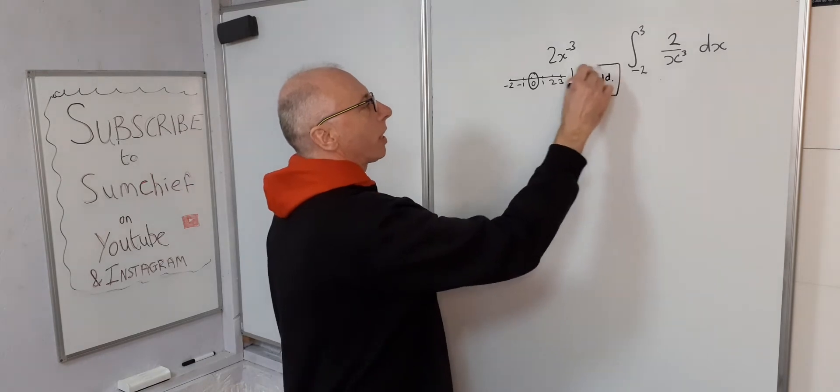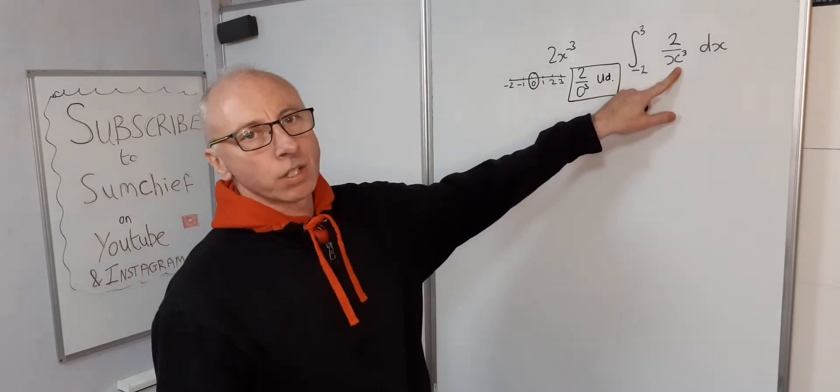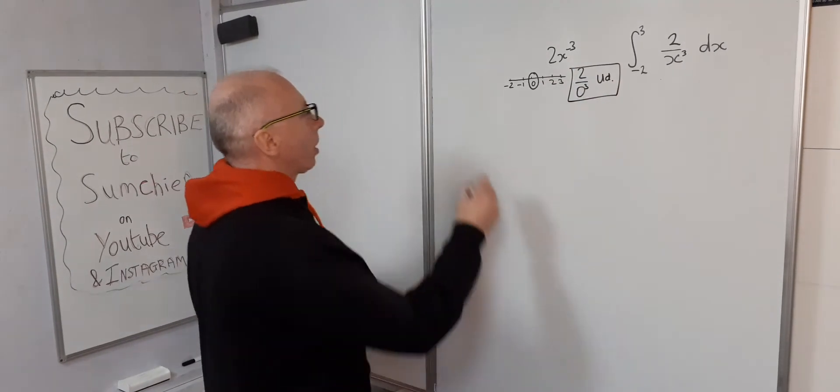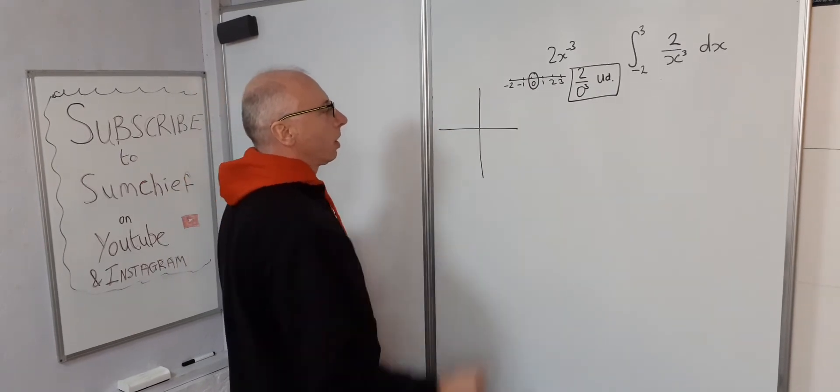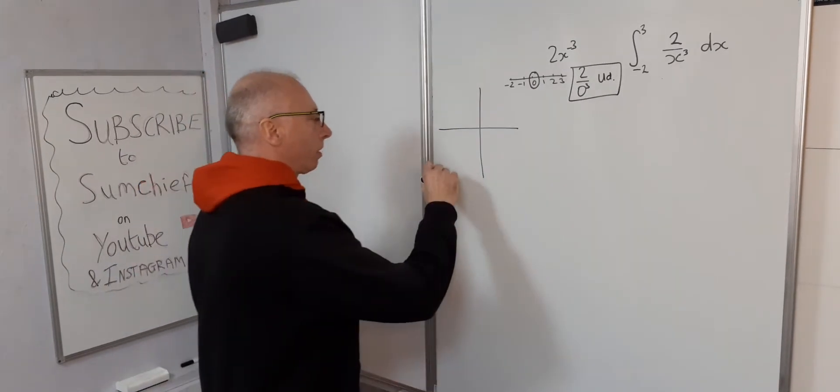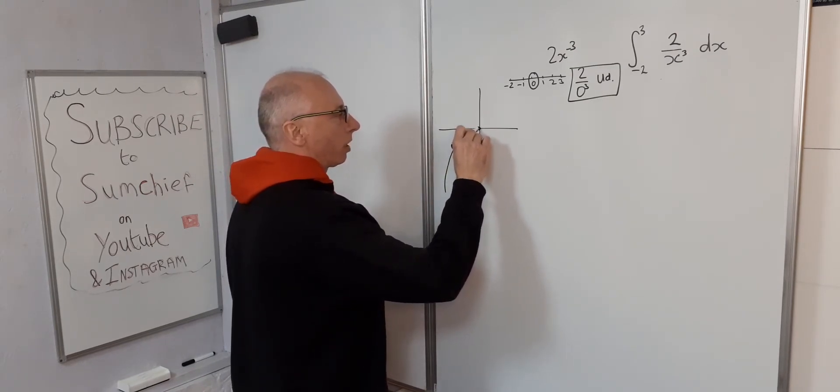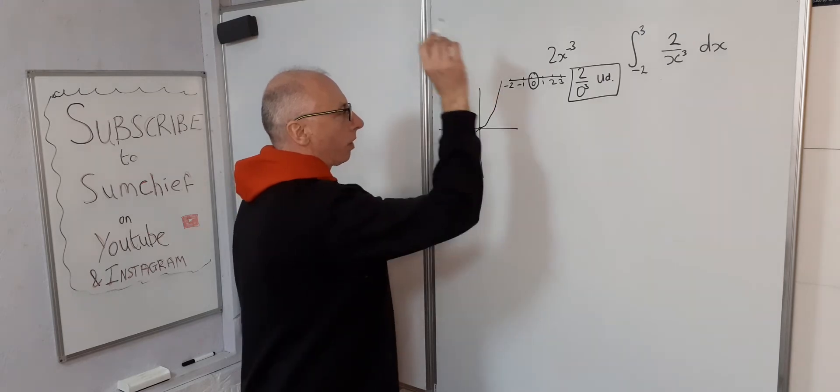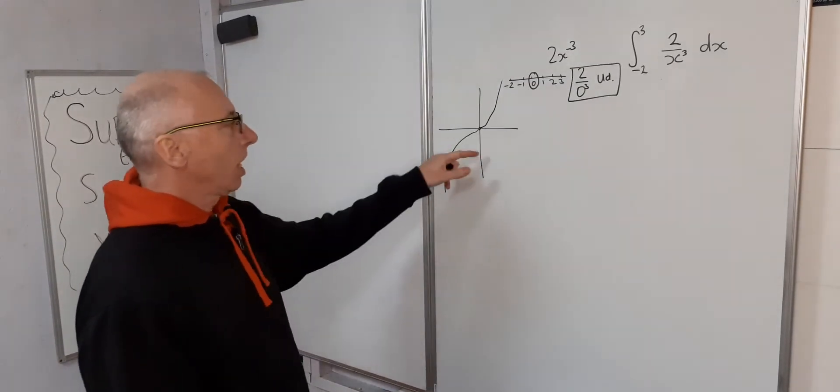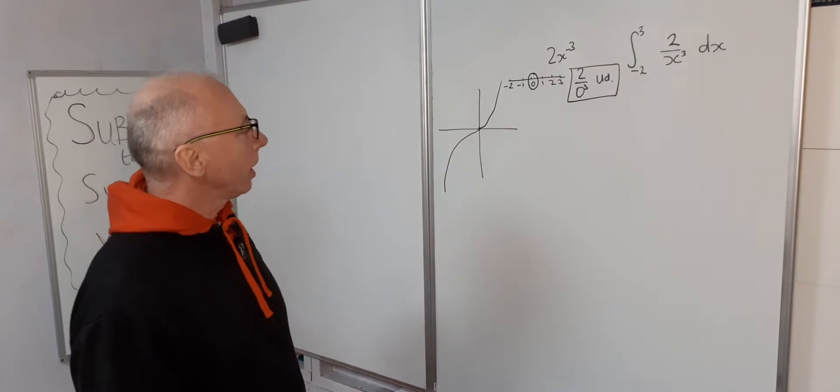So what we can say is that this function here is not continuous. So a quick look at the graph of 2 over x cubed: it'll come from down here somewhere, come here, appear to cross the origin, and then go off over here. It's not the greatest of pictures, but it gives you some idea what would happen.